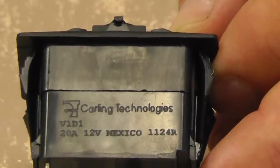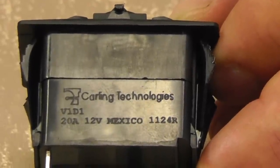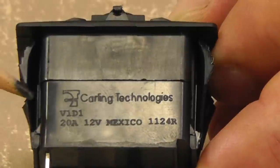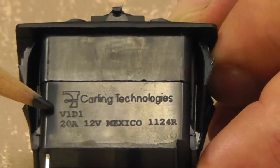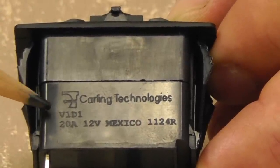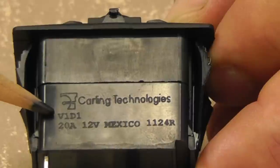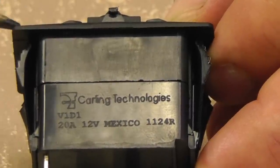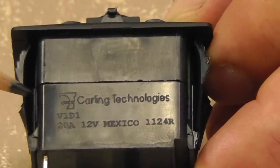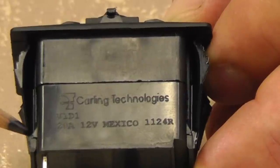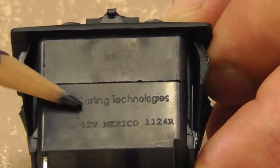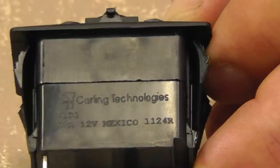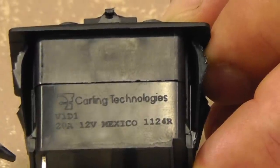There are some markings on the side of the body of the Carling rocker switches, the most important of which is an alphanumeric sequence that's four characters long. It will begin with a V, like Victor. So this one I believe is V1D1. And these numbers signify the configuration of the switch. Although a full part number is 14 characters long, this four digit number will be enough so you can search on our website.